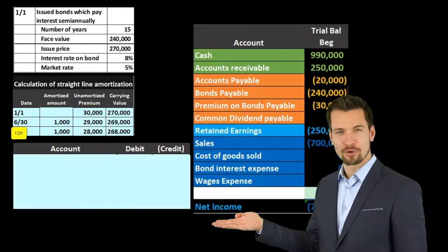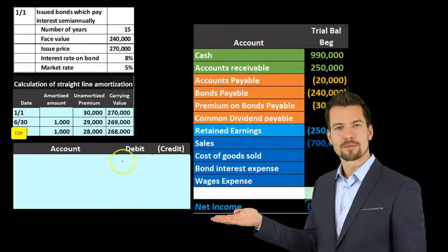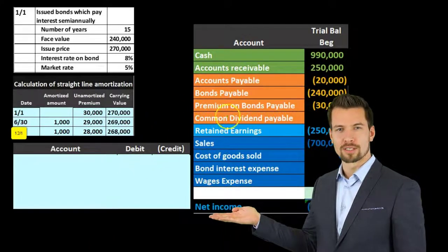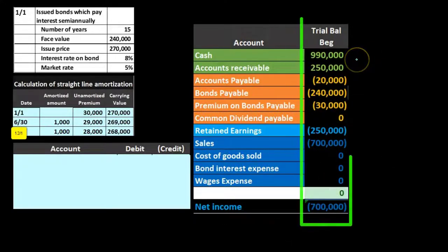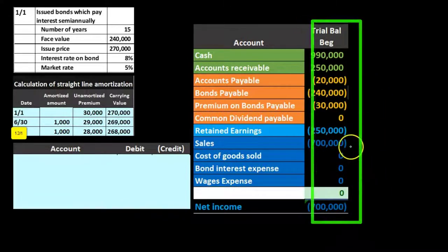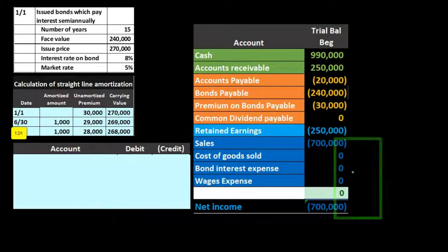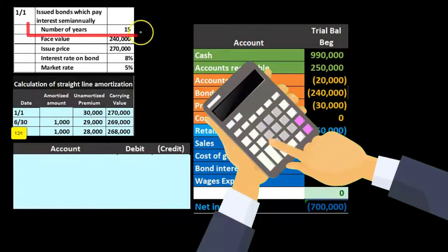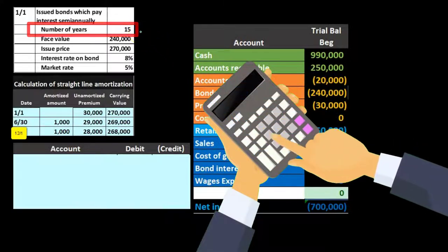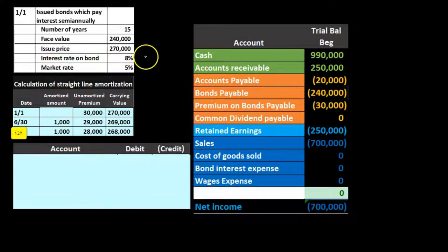Now we'll record the journal entry to capture both the interest payment and the reduction of the bond premium. We'll post it to our trial balance, which is currently in balance — debits equal credits, net income is $700,000 from sales with no expenses yet. We have 15-year bonds and will pay interest at the contract rate of 8%, and that's the cash leaving the company.